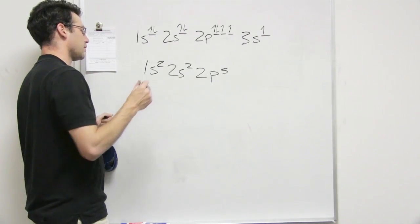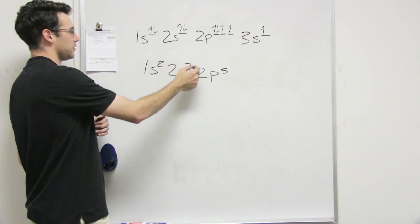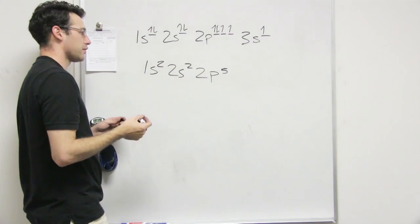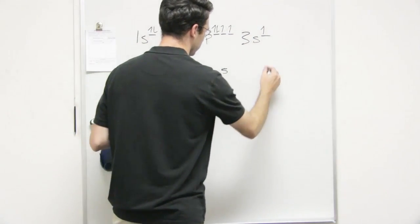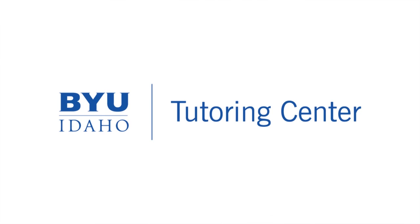So what element is this? It's element 2 plus 2 plus 5, so 9, so it's going to be number 9 on the periodic table, or fluorine.